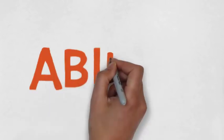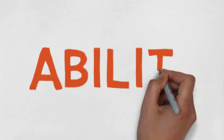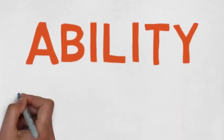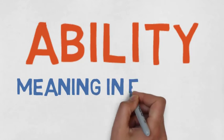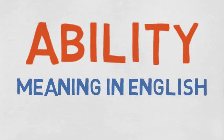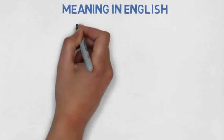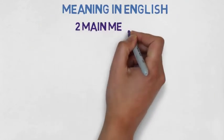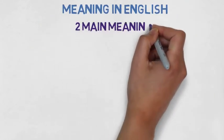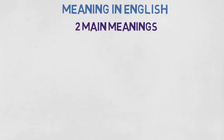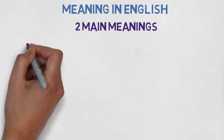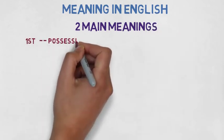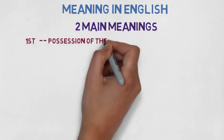Our next word is ability. So what does ability mean in English? Ability has two main meanings. The first one is possession of the means or skill to do something.